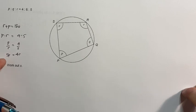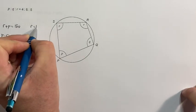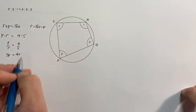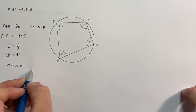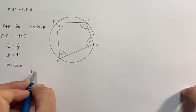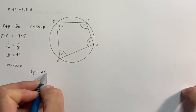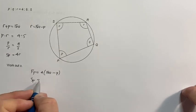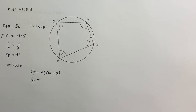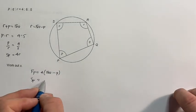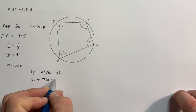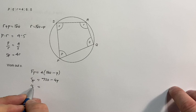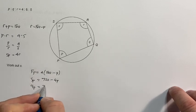From here I can say that r is the same as 180 take p. So replacing that letter r, I can say that 5p should equal 4 lots of 180 take p. So 5p is equal to 4 lots of 180, which is 720 take 4p. Bring the 4p across, add 4p, 9p is equal to 720.